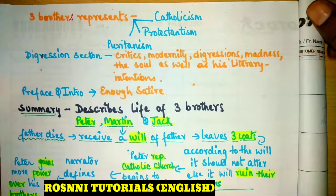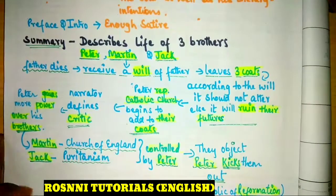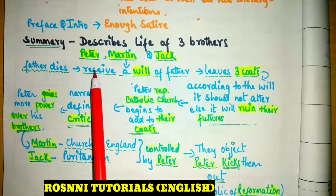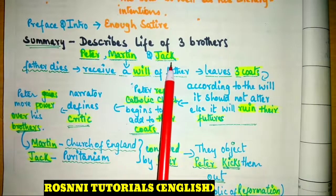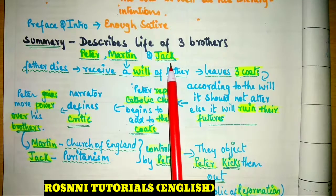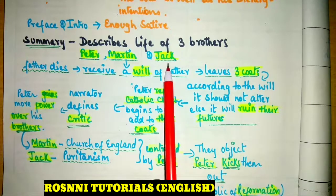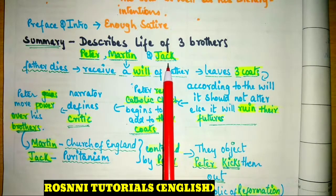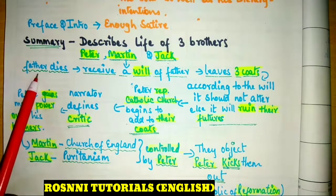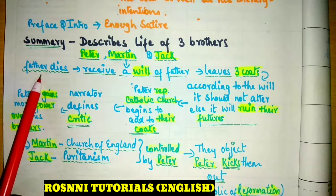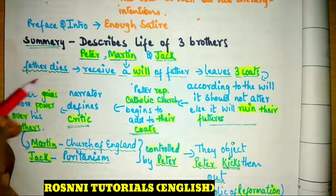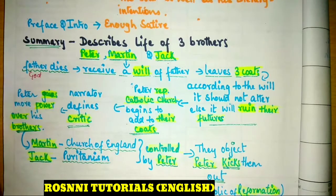Let us start with the story now. At first we find three brothers: Peter, Martin, and Jack. They represent Catholicism, Protestantism, and Puritanism. These three brothers are away from their father, and they receive a letter through which they get information that their father is in need of them. When they come to the father, they find the father is already dead. Here, the father represents God.